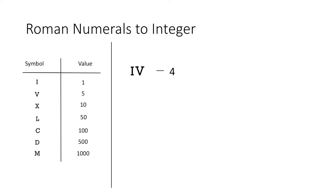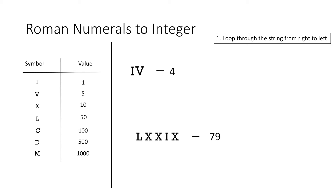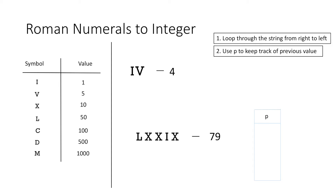So now let's use this basic concept to convert roman numerals to integer. For this, let's take another example: the number 79, which is represented as LXXIX in roman numerals, and we have to convert this to integer. Firstly, we take the input of this roman numeral as a string and then loop through the string from right to left, using a variable p to keep track of the previous value and another variable answer to store the integer value.